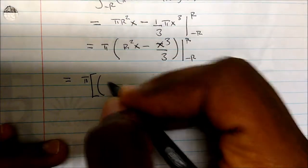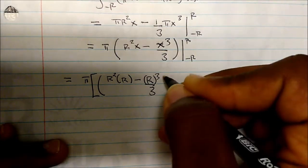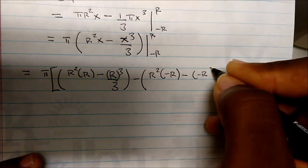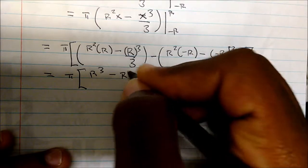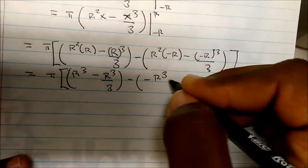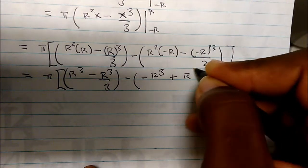Now I can plug in the bounds. This becomes π multiplied by: r squared times r minus r cubed over 3, minus r squared times negative r minus negative r cubed over 3. A negative cubed is just negative, and a negative times a negative is a plus, so that gives plus r cubed over 3.